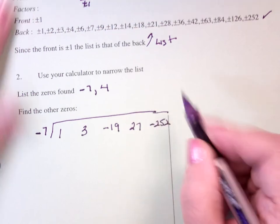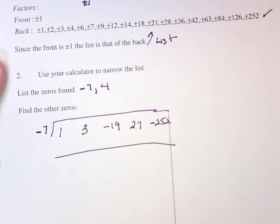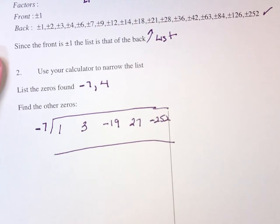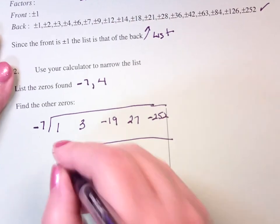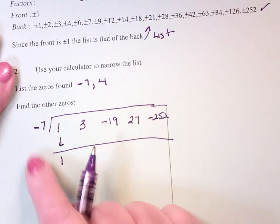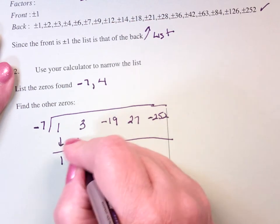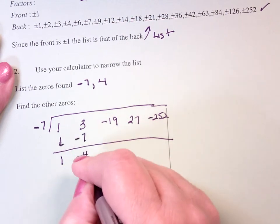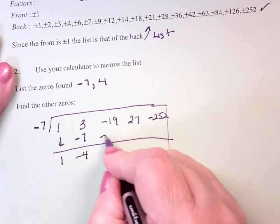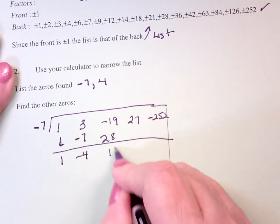Because it's a zero, I know my remainder will be zero. Bring down the 1. Negative 7 times 1 is negative 7, and add. Negative 7 times negative 4 is positive 28, and add.